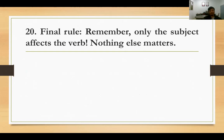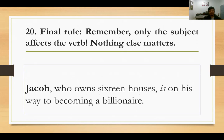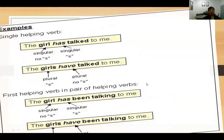Remember: only the subject affects the verb, nothing else. Contoh: 'Jakob, who owns 16 houses, is on his way to becoming...' — walaupun ada clause 'who owns 16 houses', ini tidak mempengaruhi agreement. Yang fokus kita amati adalah subject: Jakob — singular — maka is. Tapi 'Jakob and Melina, who own 16 houses, are...' — dua subject, maka are.